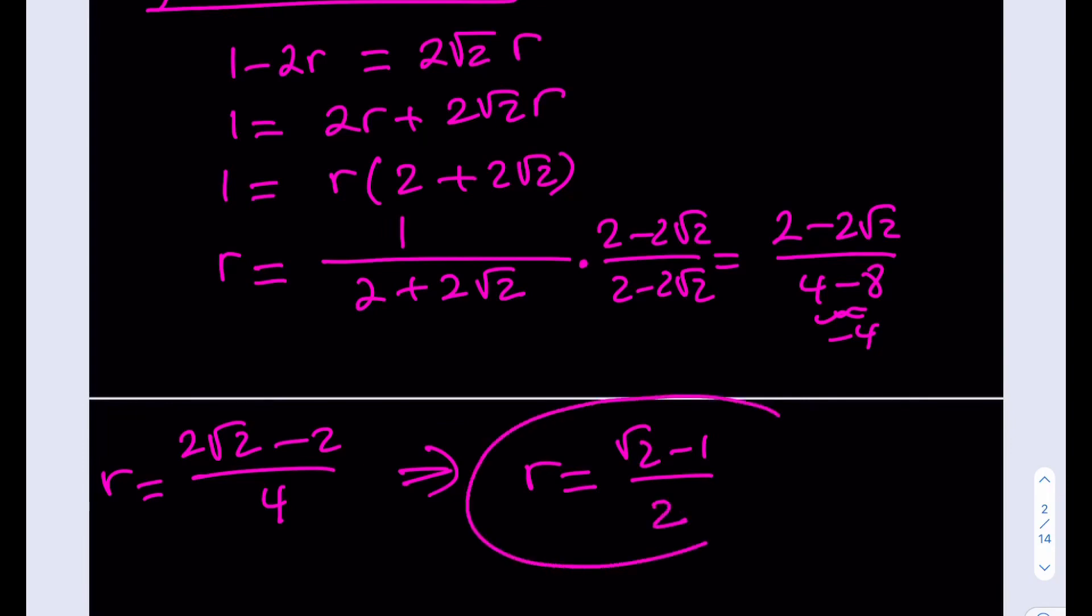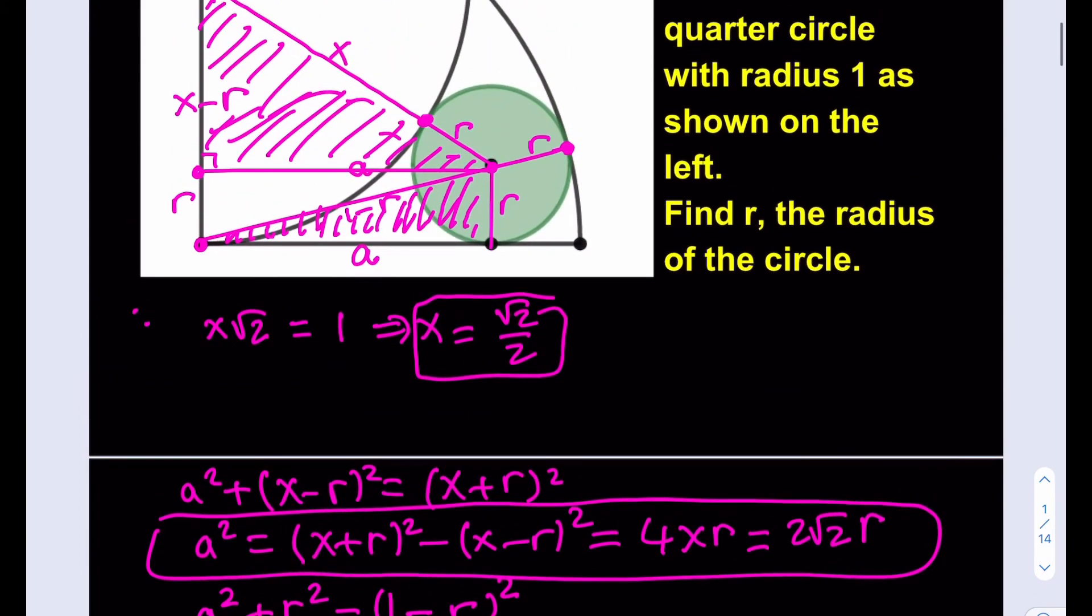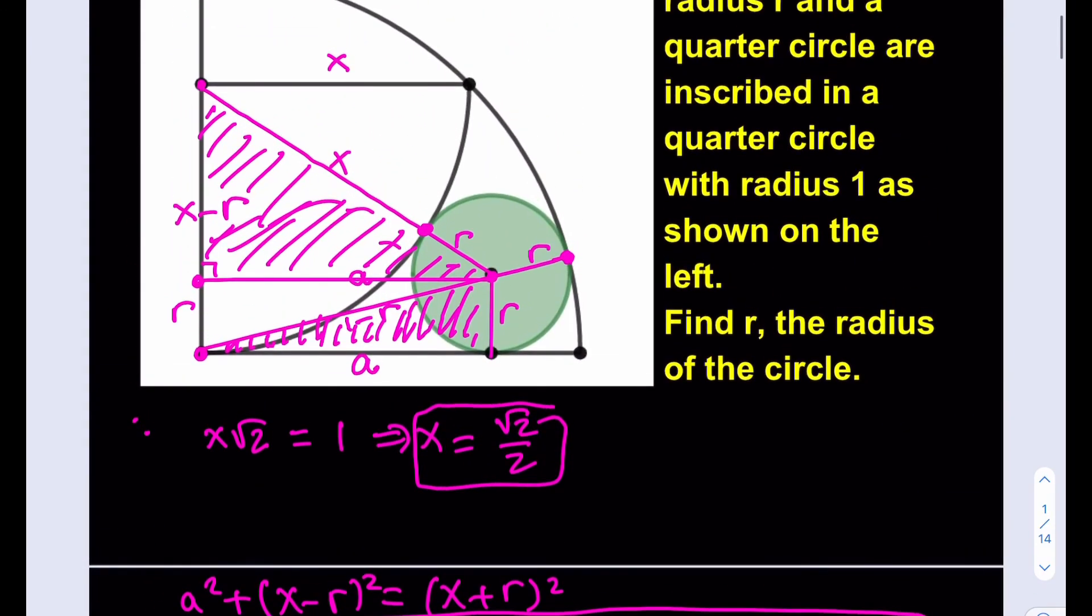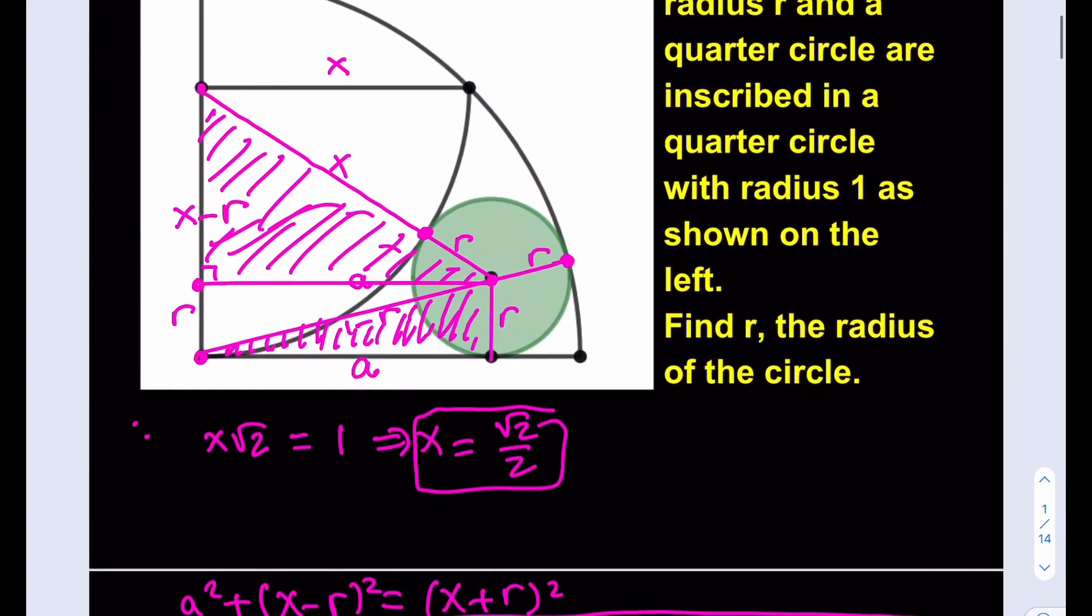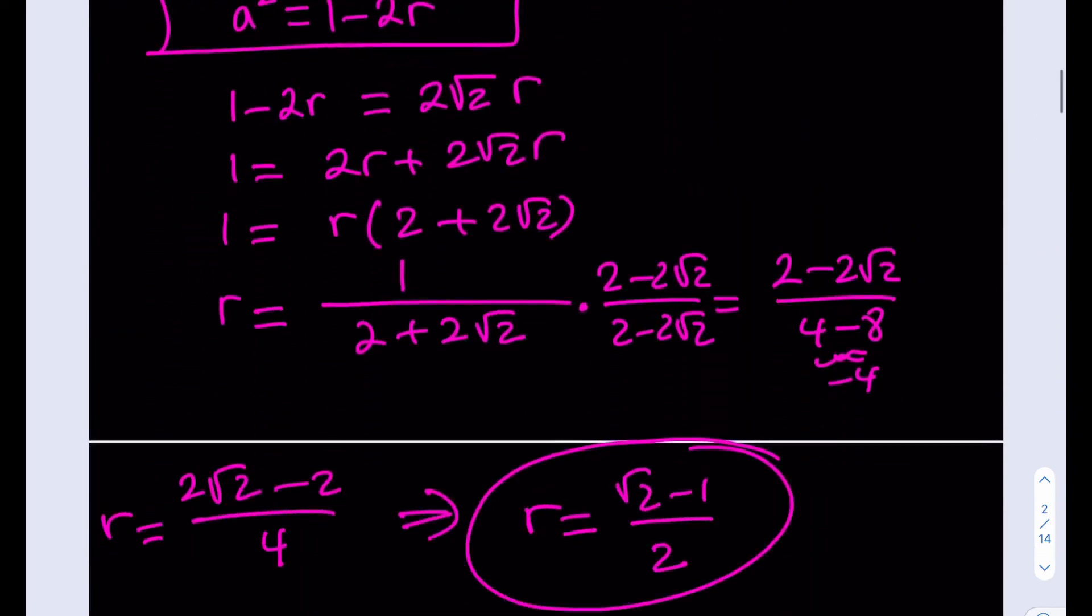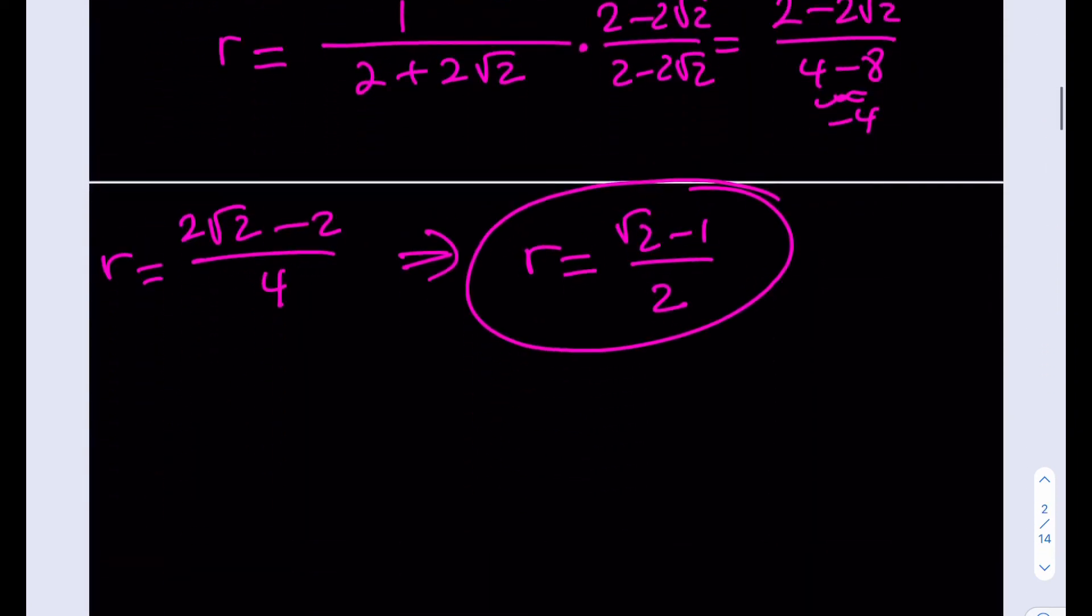Root 2 minus 1 divided by 2. So that's going to be the radius of our circle, the green one in the picture. And that's the answer. Thank you for watching. Please comment, like, and subscribe. Let me know what you think about the video. And see you in the next one. Take care. Bye-bye.